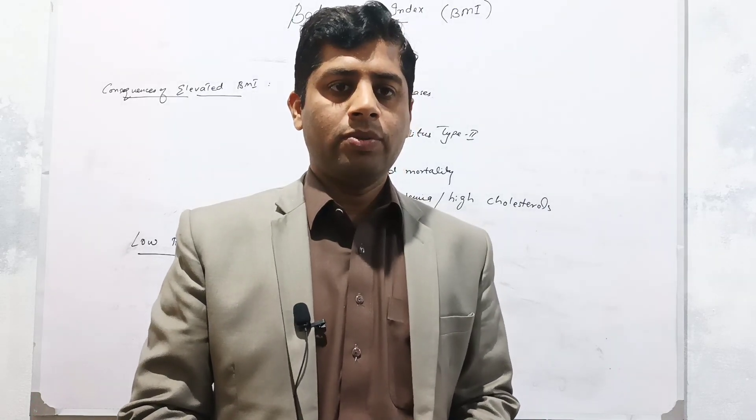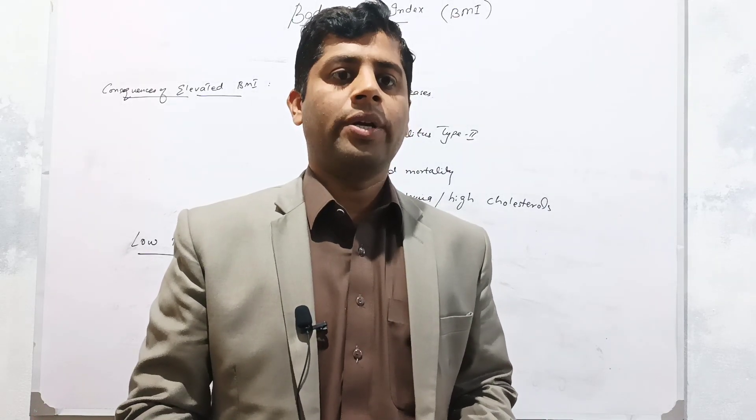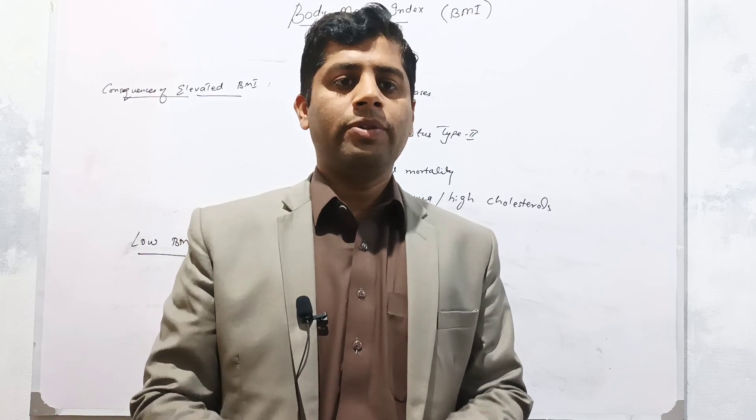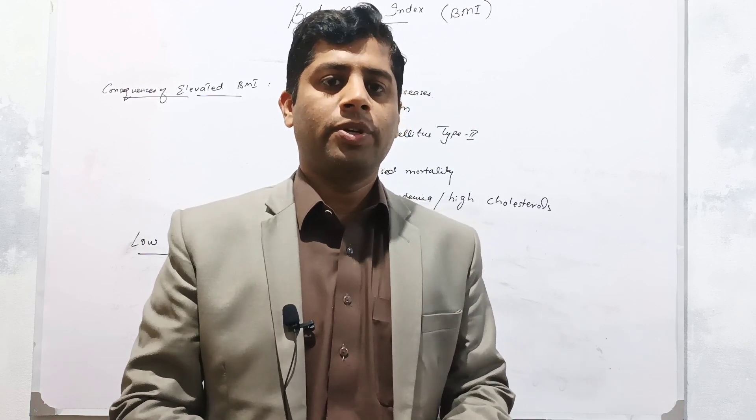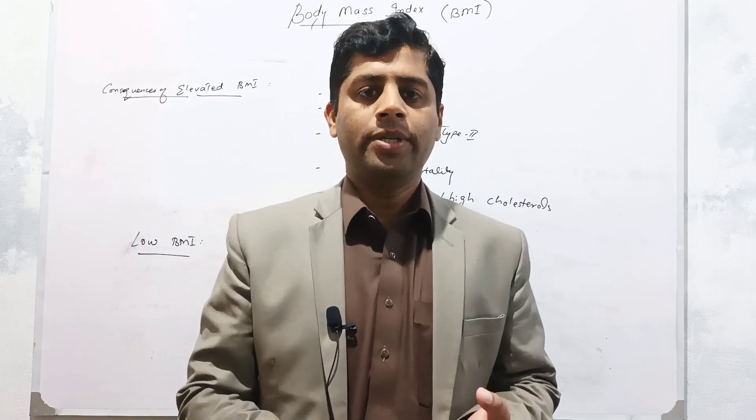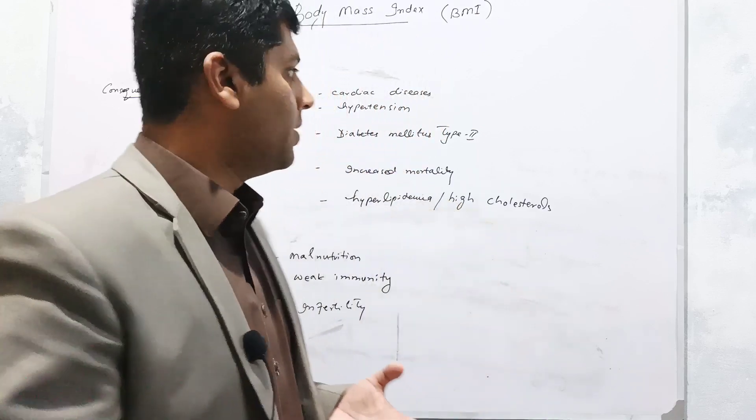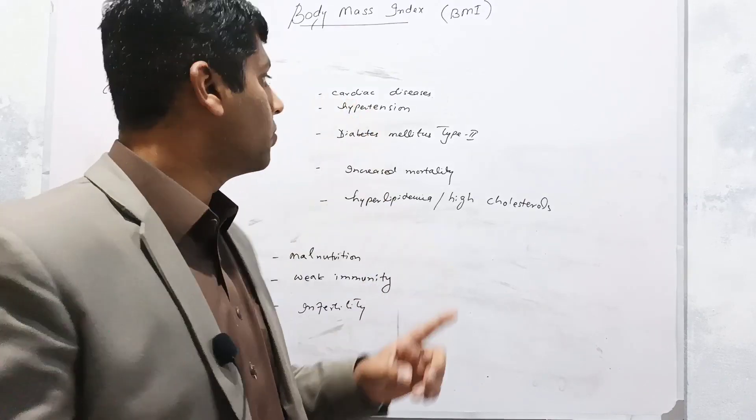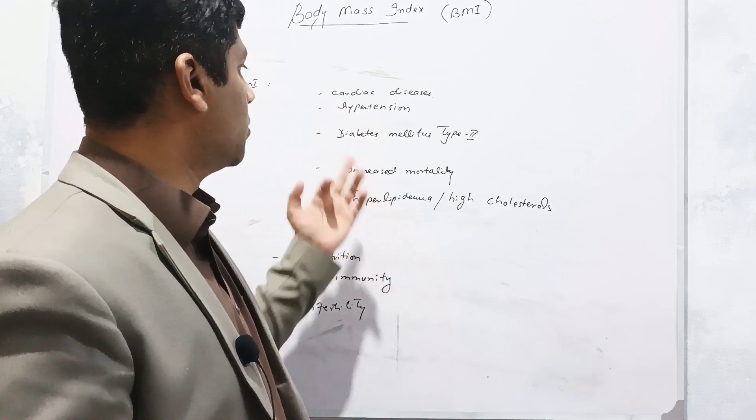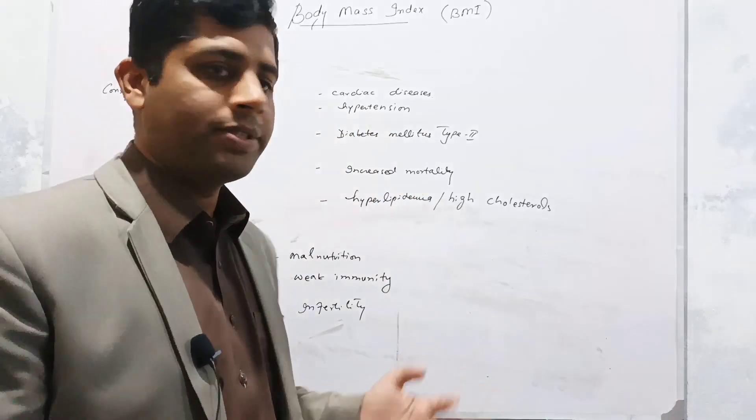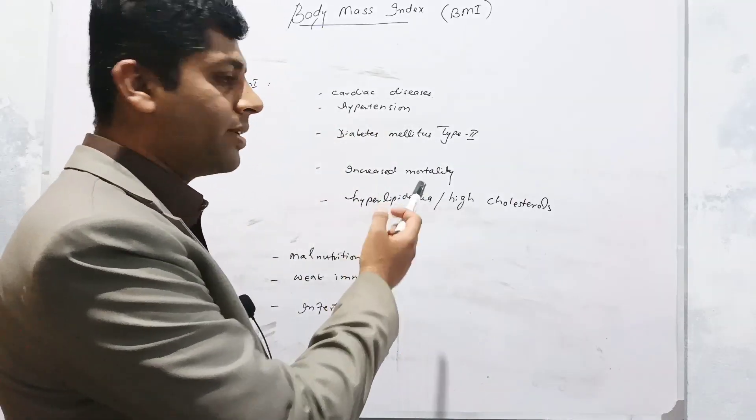Now let's discuss what is meant by normal BMI value, elevated BMI value, and low BMI value. Normal value means you are in good position of proteins, muscles, and fats in your body. But if you have elevated BMI value, it means you are exposed to, you are prone to cardiac diseases. You may suffer from cardiac diseases, hypertension, high blood pressure, diabetes mellitus type 2.